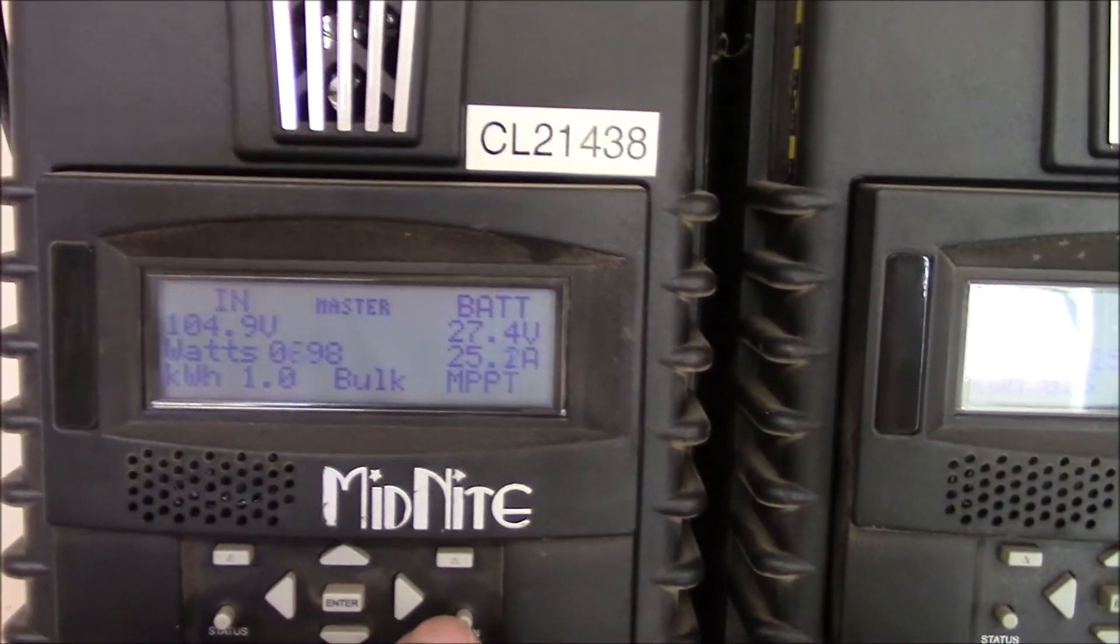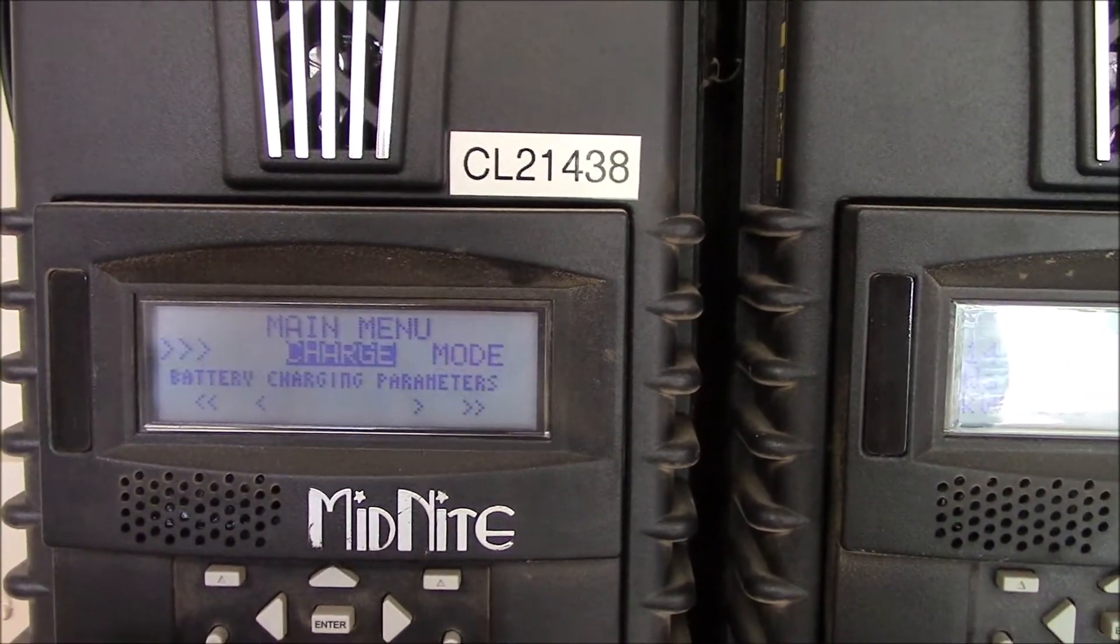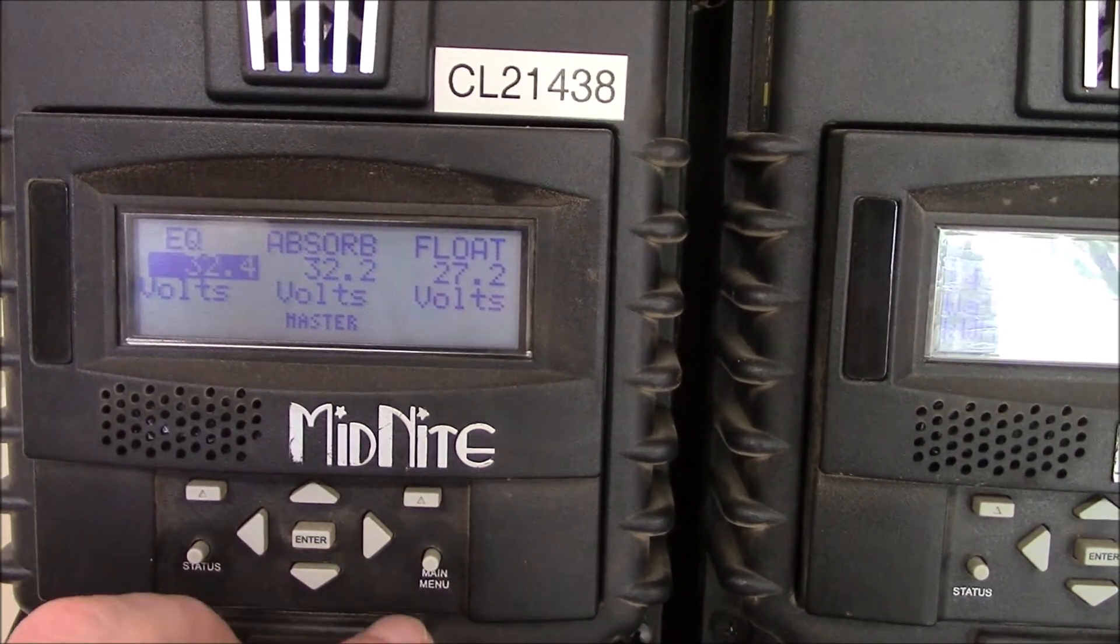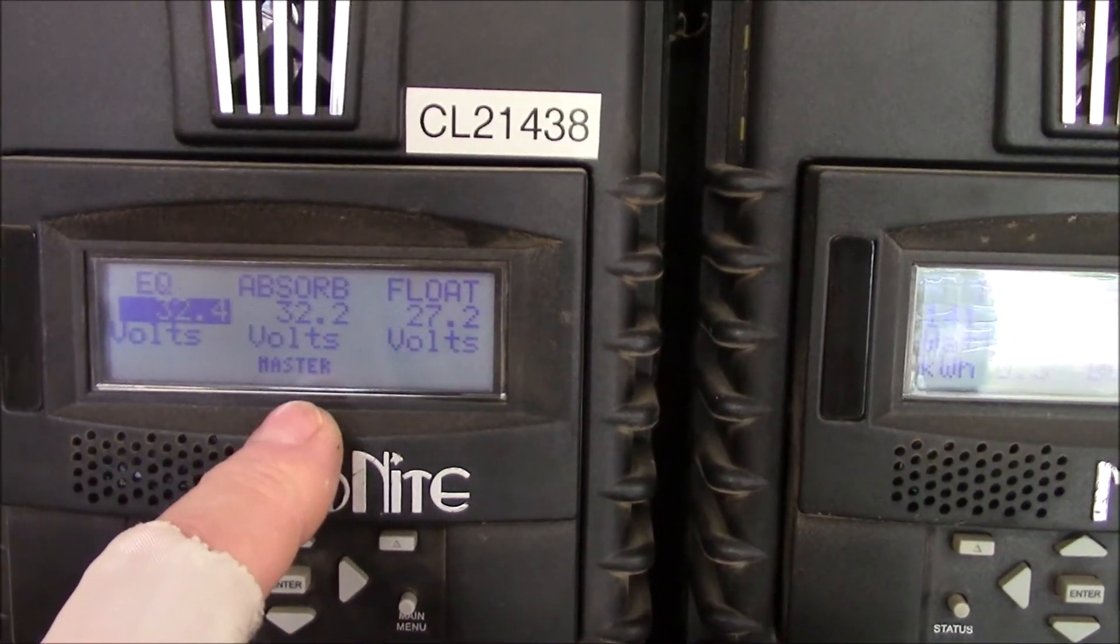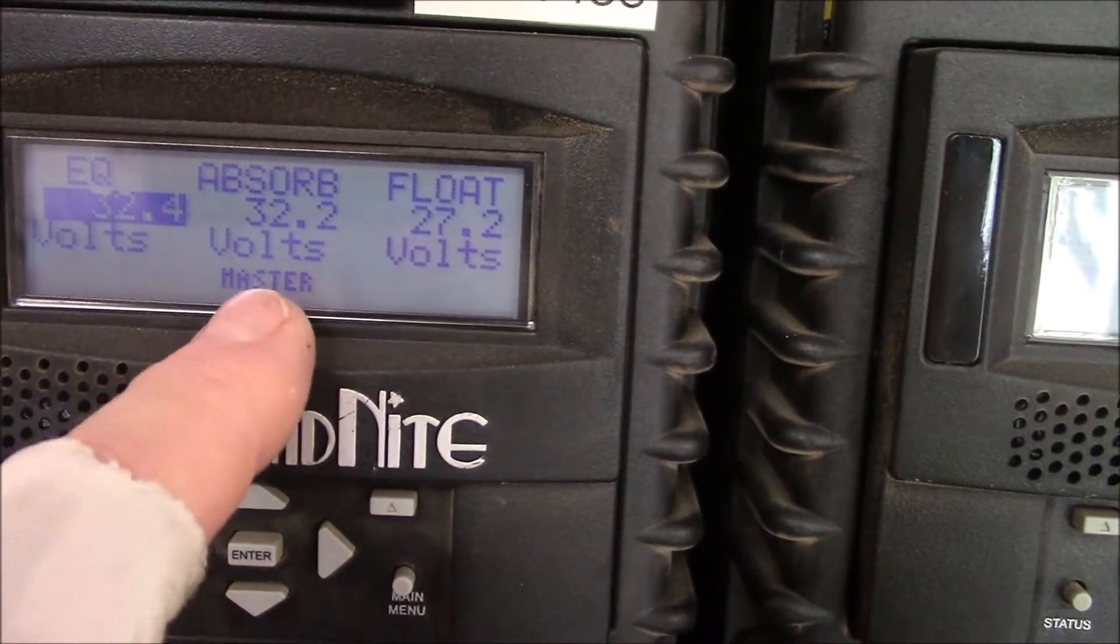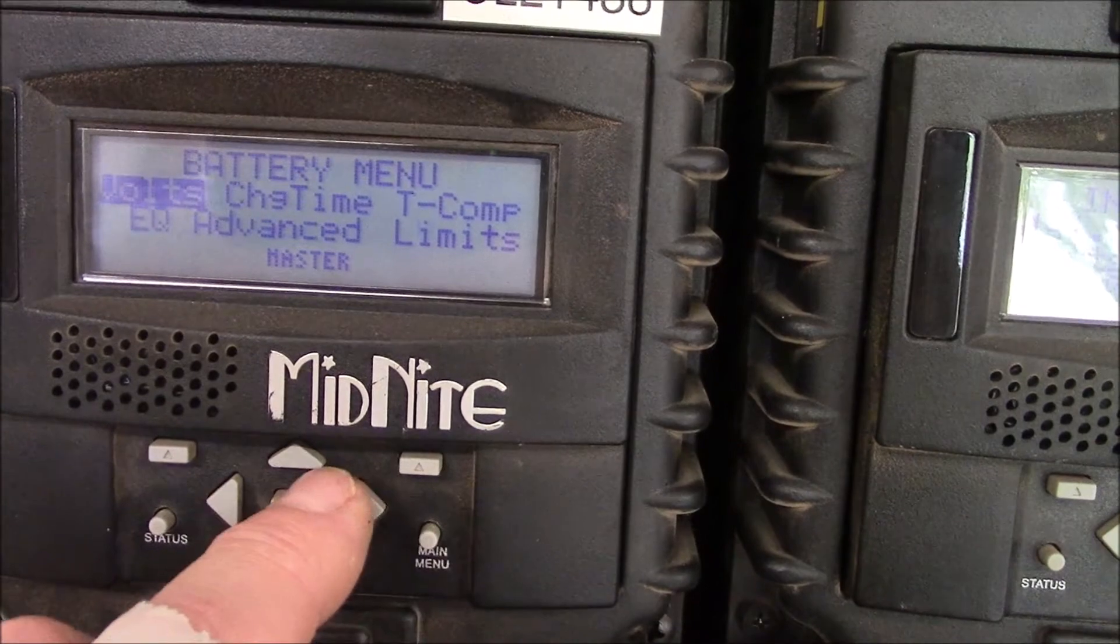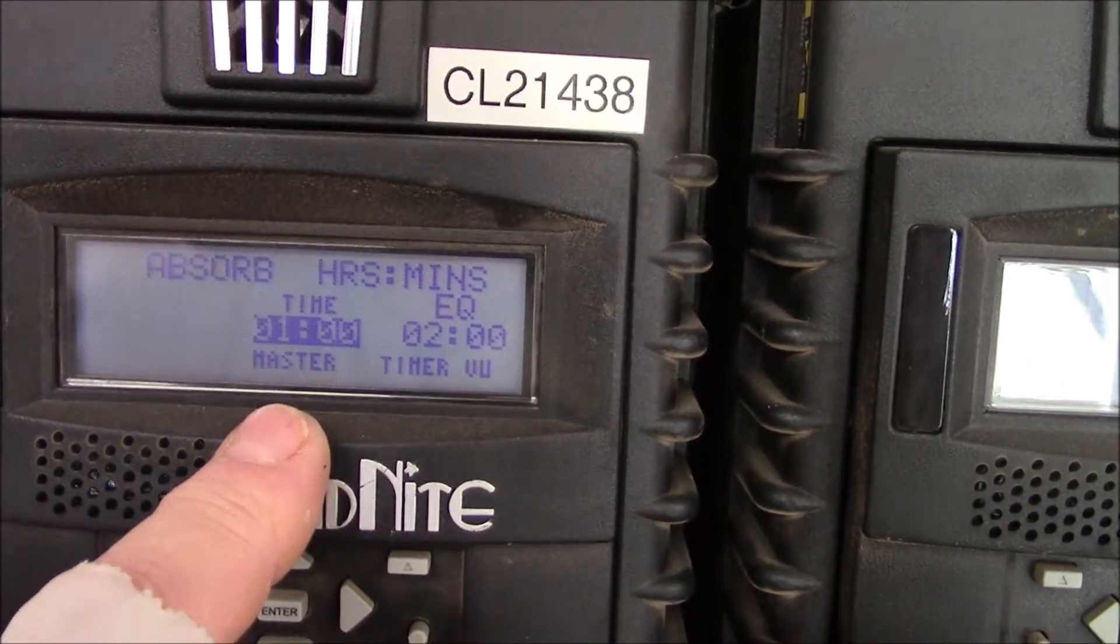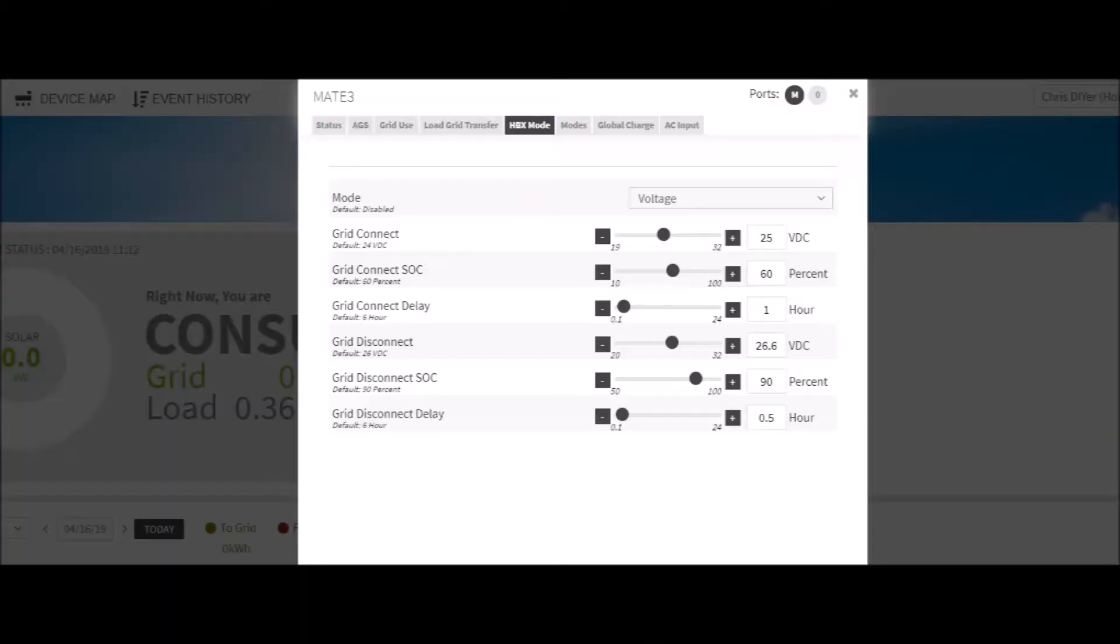But I want to show you my charging parameters. Okay, take a look at here. Here's the volts. I run this up and absorb to 32.2. It's a 24-volt system for about an hour. It is obvious I need to do a no-kidding equalization charge. See, right there for an hour.